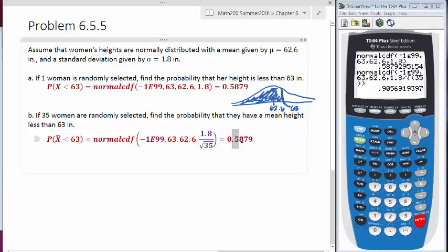So that's a pretty big difference here. This is 90% now. So if we're looking at sample sizes of 35 women, and then you take the mean of their heights, 90% of the time, or 91% of the time, their mean height is going to be less than 63.